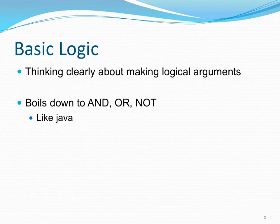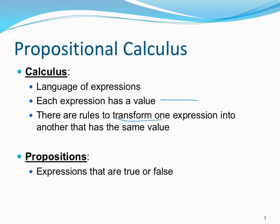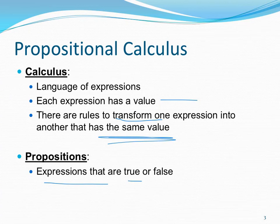Just like in Java, we've got logical operators: and, or, and not. We're studying propositional calculus, and a calculus is just a language of expression. Every expression has a value, and we have rules that allow us to transform one expression into another that has exactly the same value. A proposition is just some sort of expression that is either true or false — for example, 'it is raining outside,' 'I like ice cream,' or 'the cat is purple.'